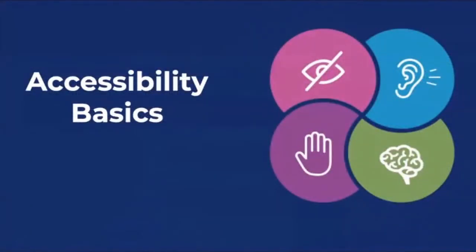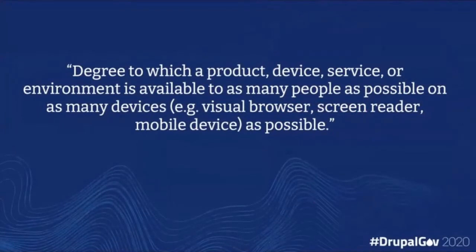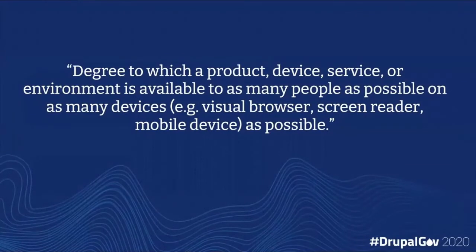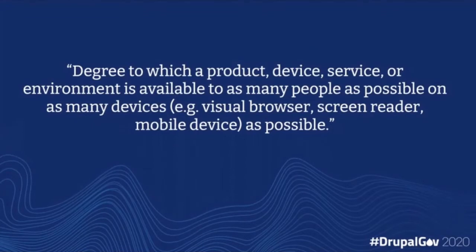In terms of our accessibility basics, I wanted to share a definition that I really love. Accessibility is the degree to which a product, device, service, or environment is available to as many people as possible on as many devices — visual browser, screen reader, mobile device — as possible. Notice that we don't have anything here specifically about disabilities. We're not calling out auditory, visual, motor, dexterity, or cognitive. It's just focusing on the people and making sure that their experience will be equivalent no matter who they are.